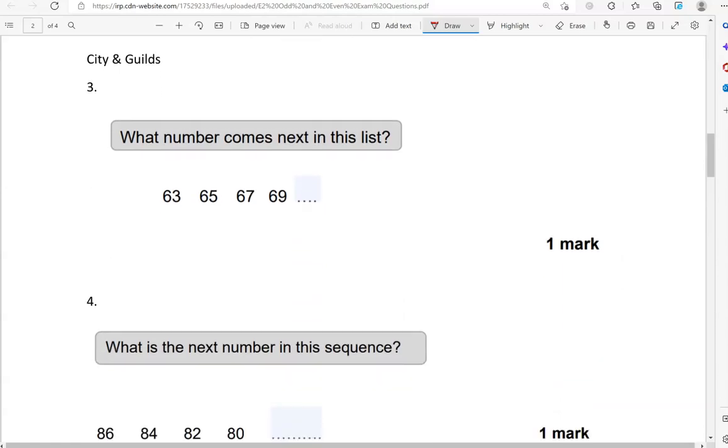What number comes next in this list? We've got 63, 65, 67, 69. So what will come after that? That's going to be 71 because we're counting in twos each time. So 63 and 2 makes 65 and 2 makes 67 and 2 makes 69 and 2 makes 71. So if you struggle to make this jump, you can do 69, 70 and then 71.